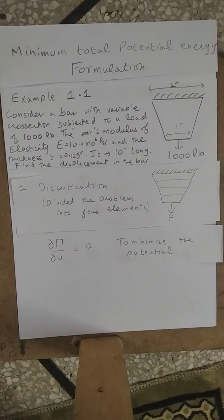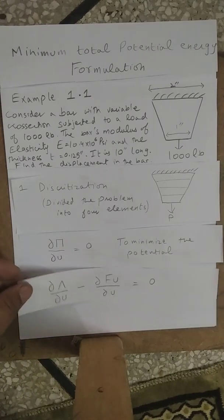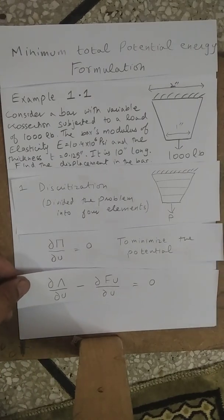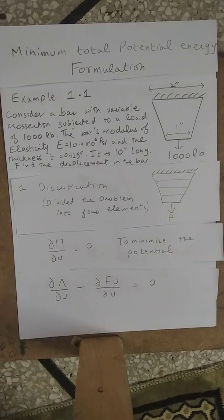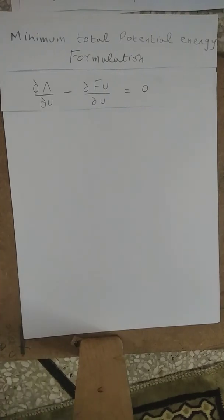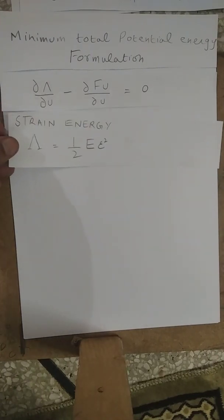We have taken the derivative of potential energy with respect to displacement and set it equal to zero. The potential energy is the difference of strain energy and the work done by the external forces, so we set it equal to zero. In the next step, we will solve the strain energy and work done one by one.